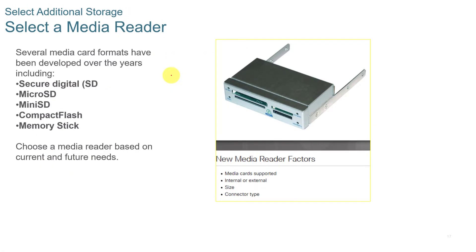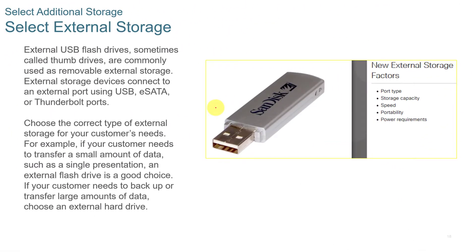If you're installing a media reader, it goes into the hard drive slots and allows you to plug in memory cards. I usually handle this externally via a USB cable with an external reader, but some businesses want them installed internally. For external storage, USB flash drives, eSATA, or Thunderbolt devices plug into their respective ports. Make sure you have the correct type for the customer's needs. At the time of this recording, a 256 GB USB drive costs about $20 — much cheaper than a few years ago when they ran $60–$100.